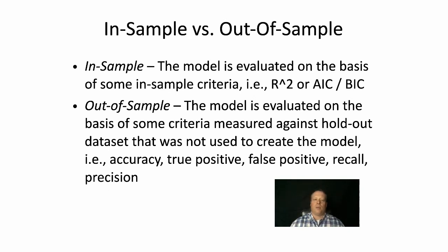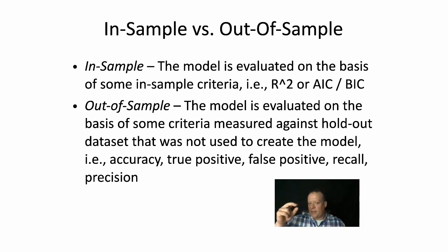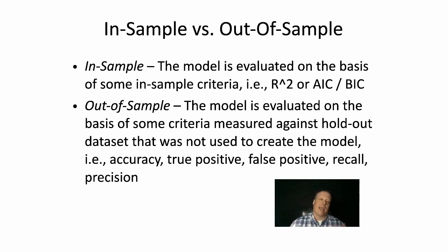We should also talk about how to evaluate these features. Imagine I have a tool that makes a prediction as to whether someone's going to take this new telemarketing offer. I could build a model just on the data I actually have — that would be in-sample data. The model is then evaluated on the basis of some in-sample criteria like R-squared, AIC, or BIC. Traditionally, though, a lot of predictive models are actually evaluated out of sample — against a holdout data set not used to create the model — in which case we can talk about accuracy, true positive rate, false positive rate, recall, and precision.